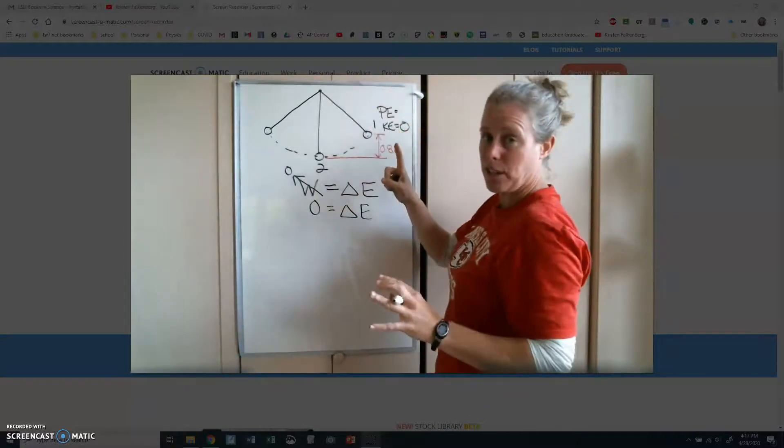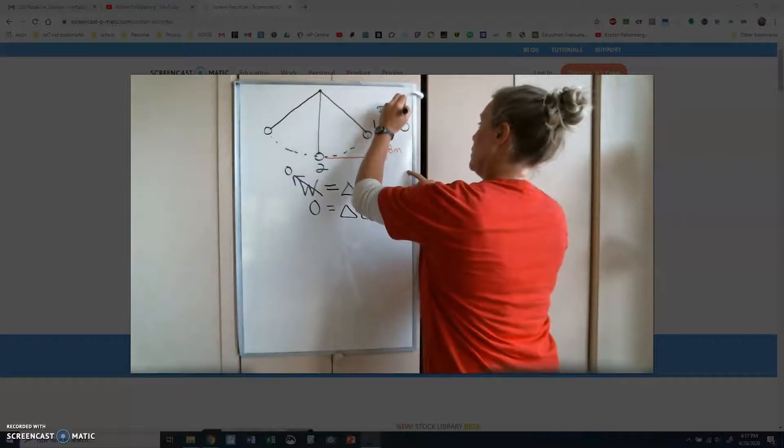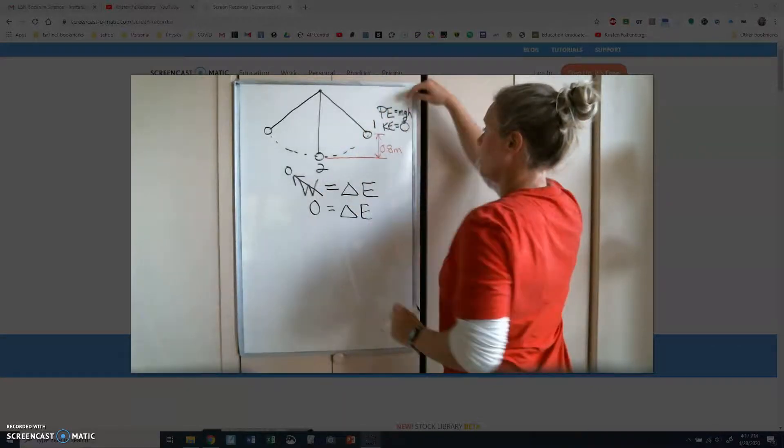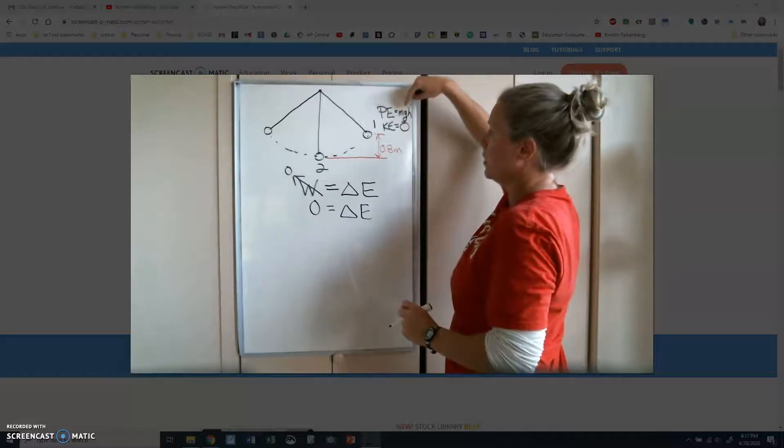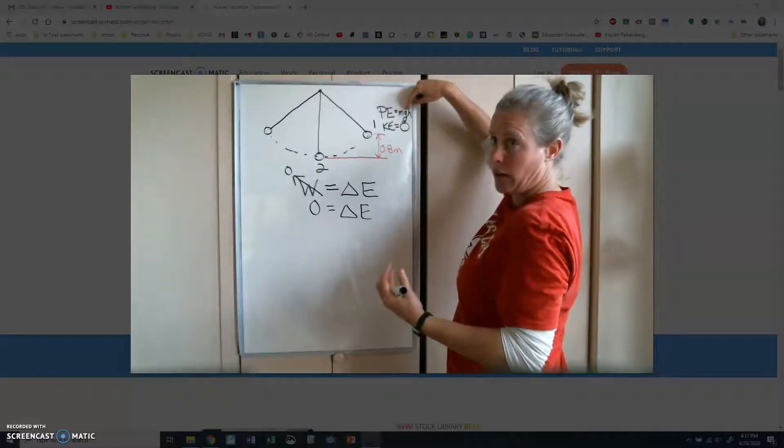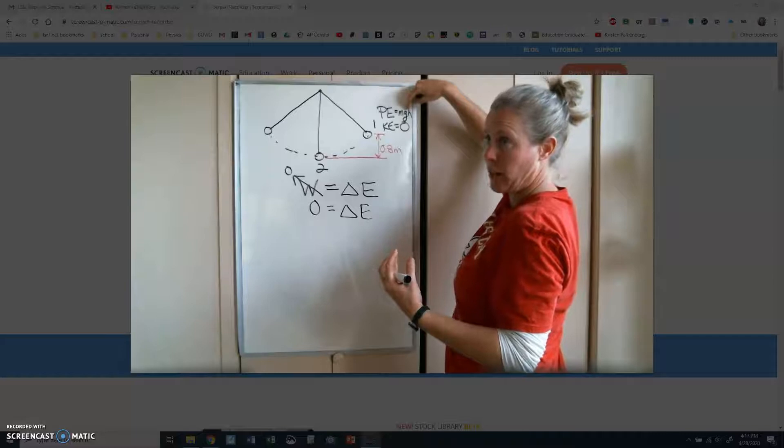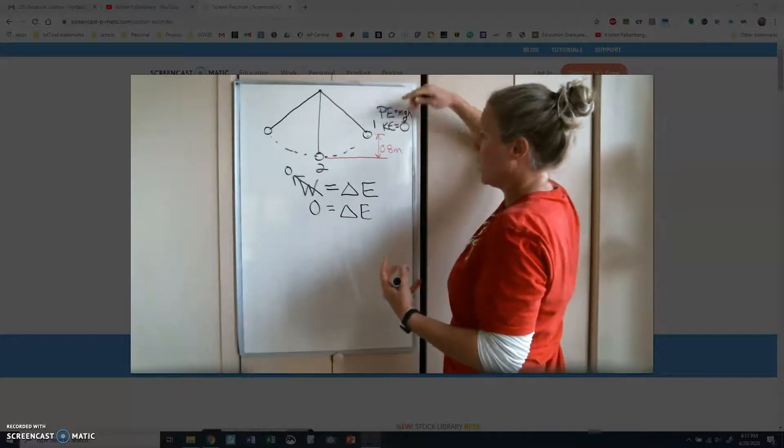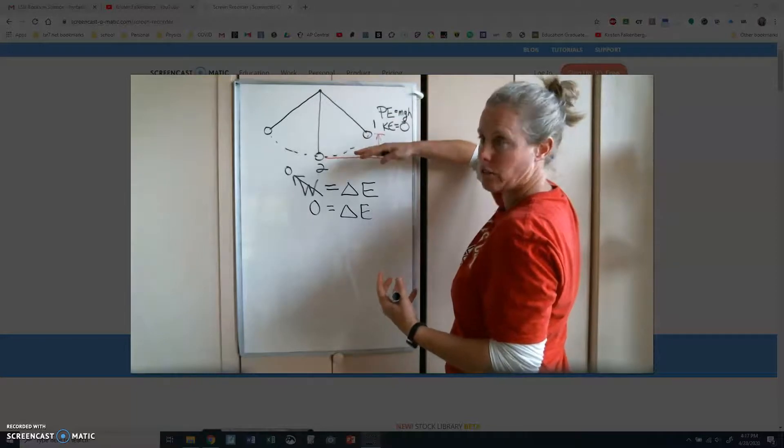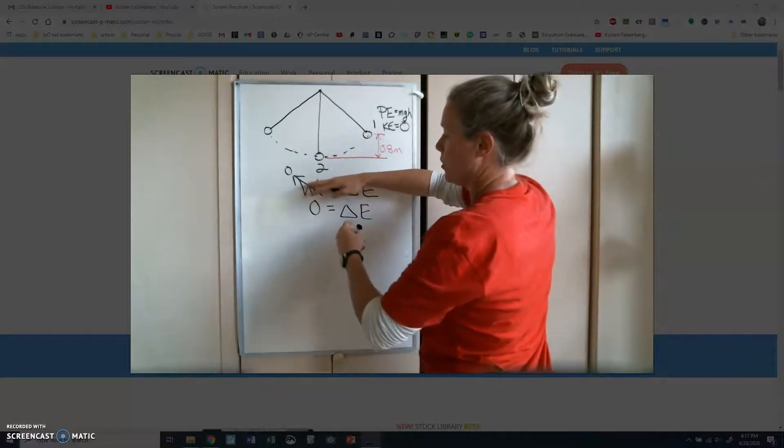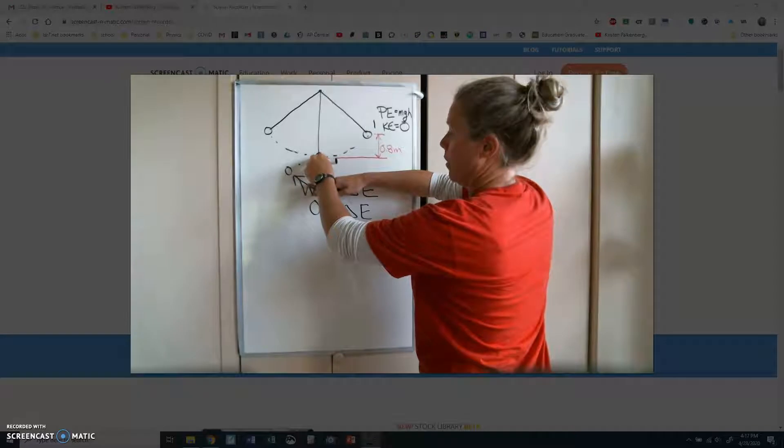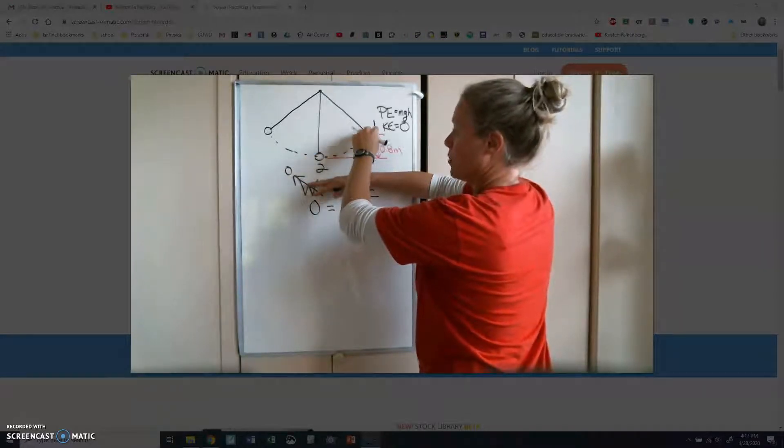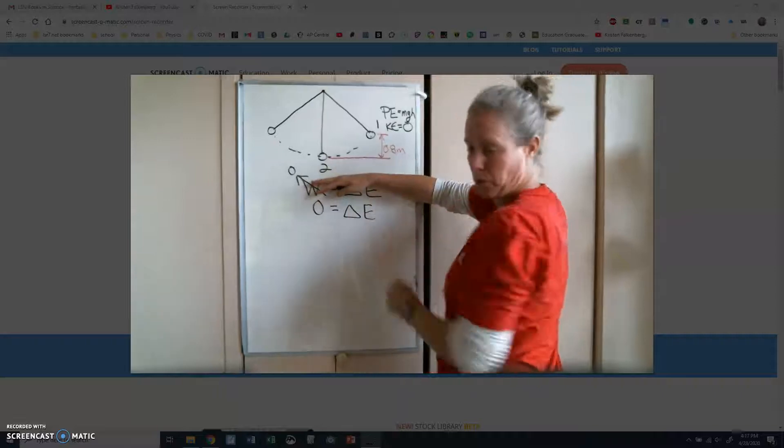And our equation, if you have your overview sheet, is MGH. Mass of the object. Gravitational acceleration, 9.8 or 10 meters per second squared. And our height. Now, the height is a relative position. If this were 0, this were 0.4 meters, then this would be 1.2 meters, but the distance between them would still be 0.8.